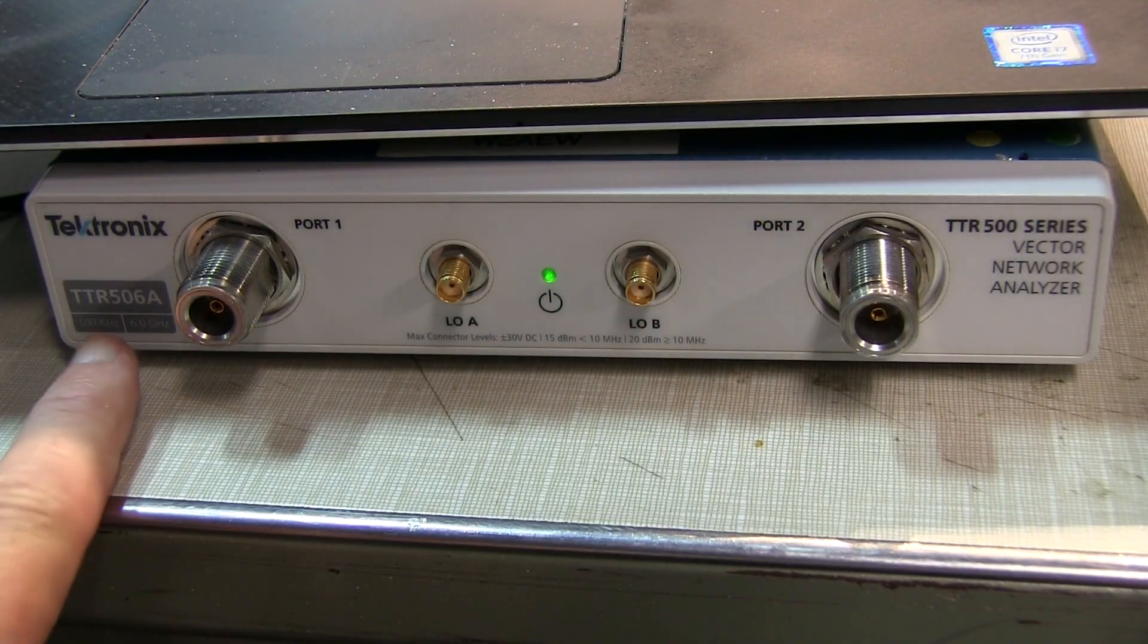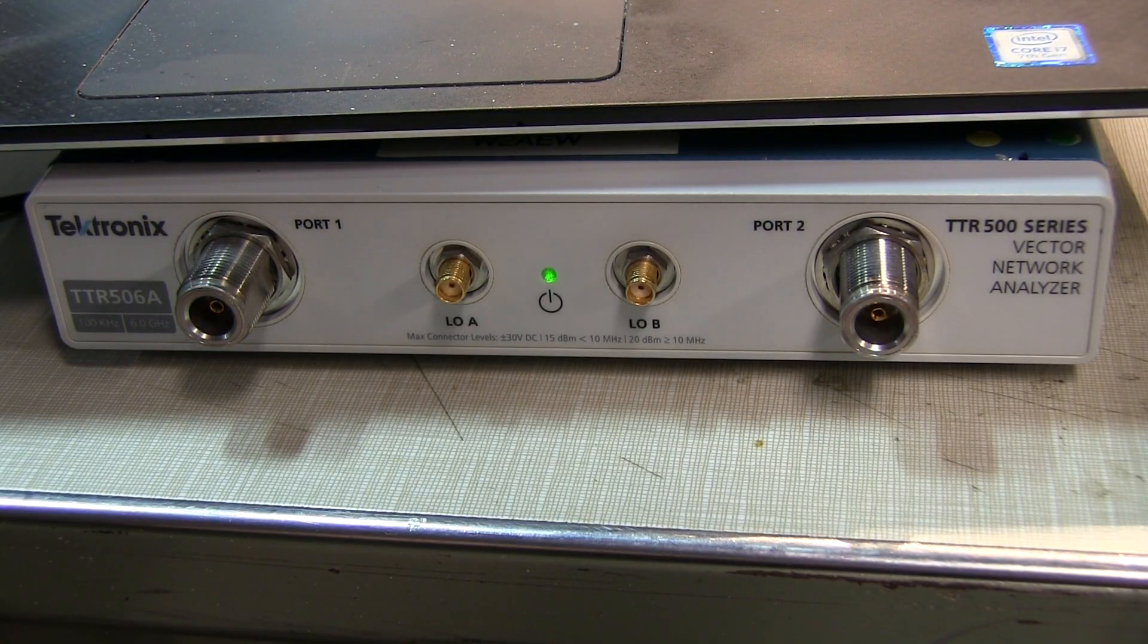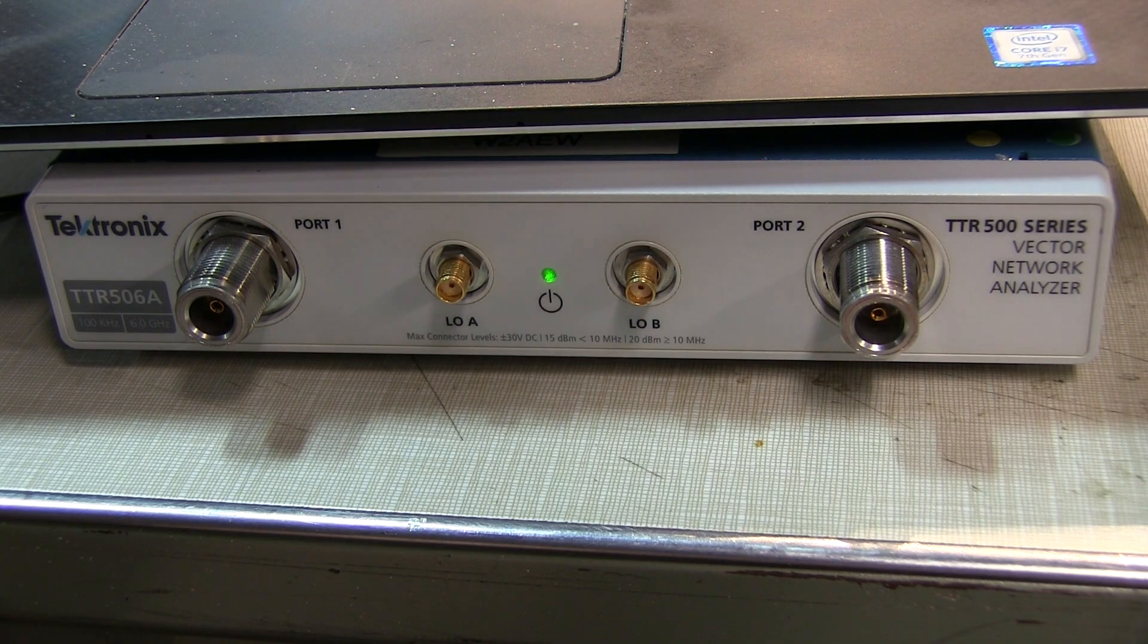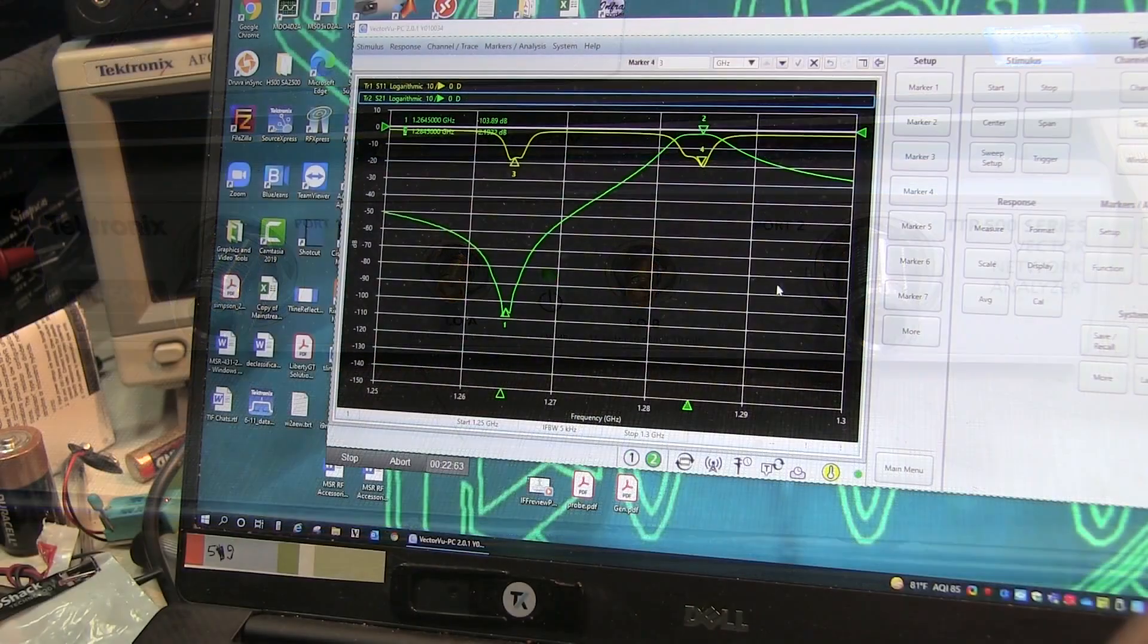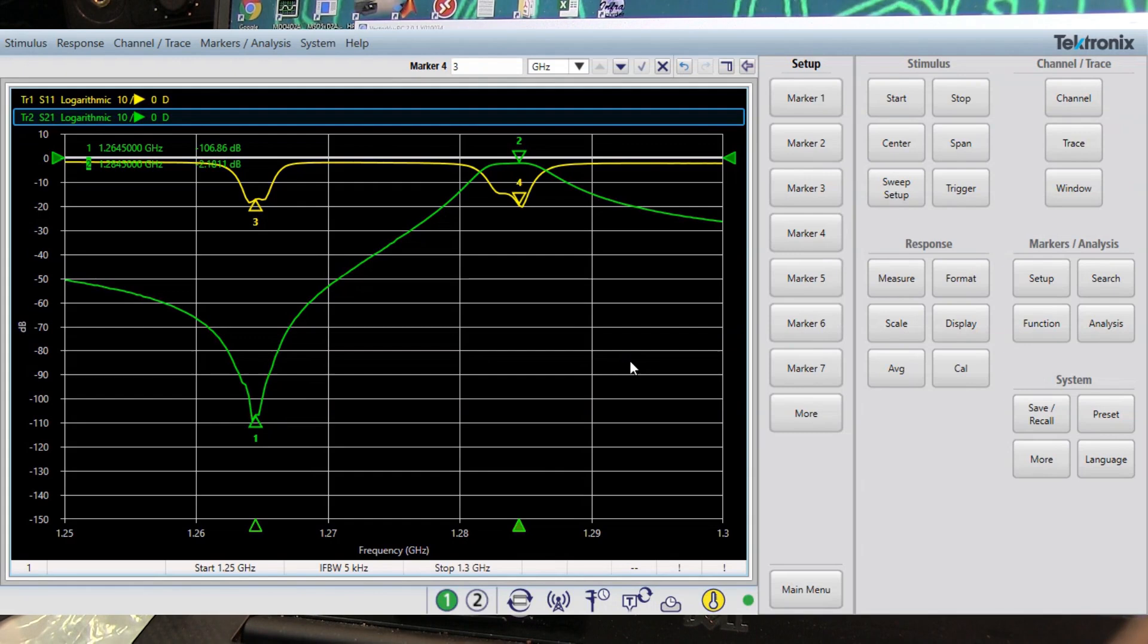Next I'm going to use this Tektronix TTR 506A VNA to see how well we did with the Nano VNA V2 plus 4. Looking at the transmit side first, looks like our notch is down around a little better than 100 dB down. So it actually did pretty good fine-tuning the notch at the new frequency of 1264.5.